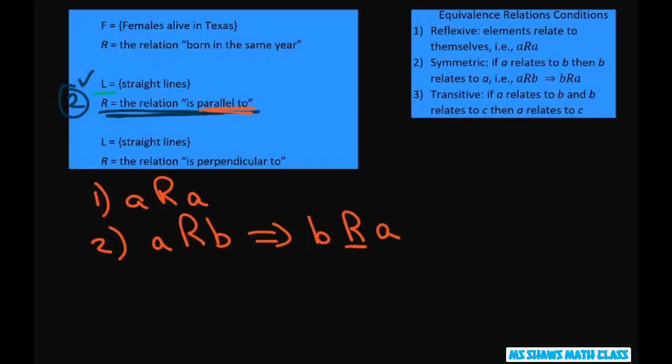And finally for three, if A is parallel to B and B is parallel to—whoops, this should be C, parallel to C—then A is parallel to C.